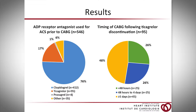Here we see some of our main results. To the left is a pie graph showing the specific ADP receptor antagonist used in our ACS patients undergoing CABG. The majority of patients at 76% were treated with clopidogrel, 17% were treated with ticagrelor, and 1% was treated with prasugrel. When we looked at the timing of CABG following ticagrelor discontinuation, 48% of patients underwent CABG five days or more after ticagrelor discontinuation, but the majority at 52% underwent CABG within five days of ticagrelor discontinuation.